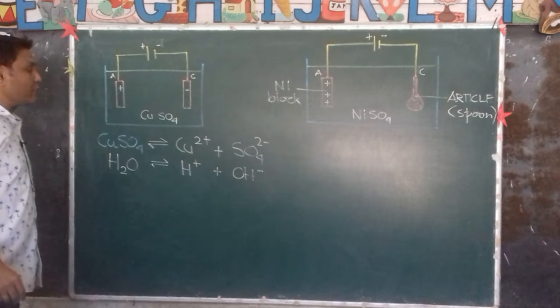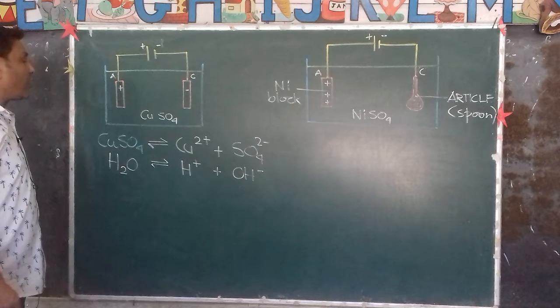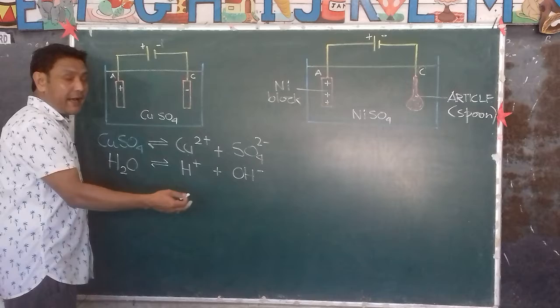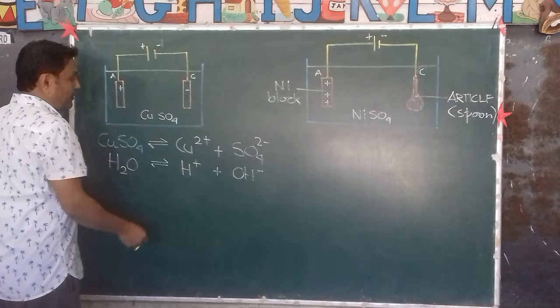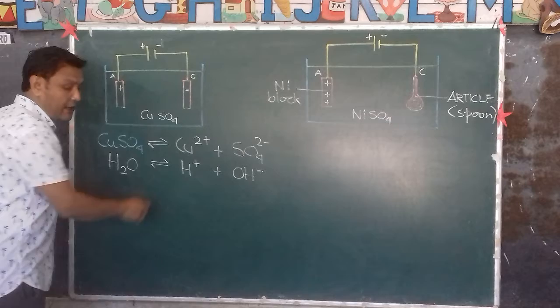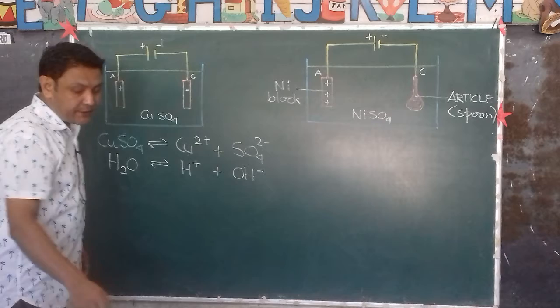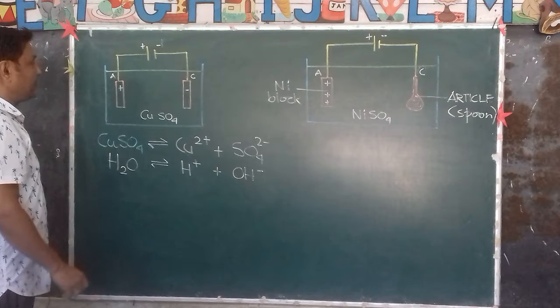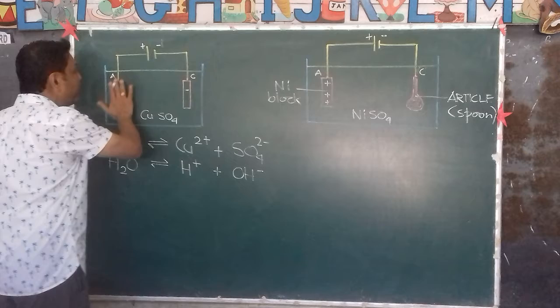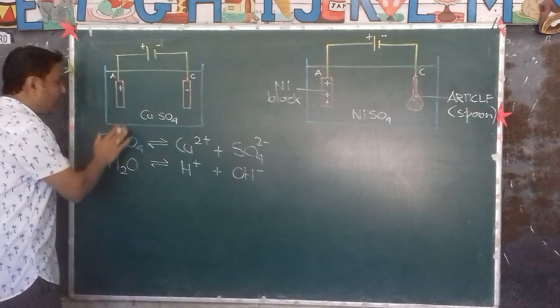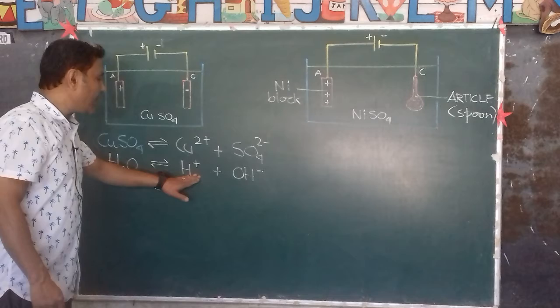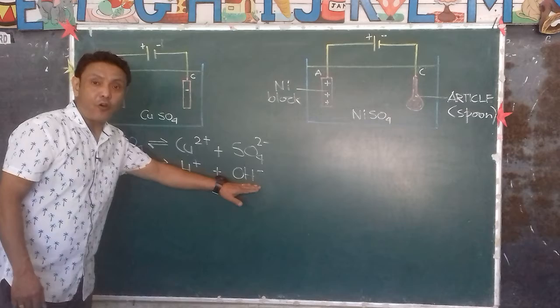A question might be: name the ions present in the electrolyte when using copper sulfate. The cations are copper ions Cu²⁺ and hydrogen ions H⁺. The anions are sulfate ions SO₄²⁻ and hydroxyl ions OH⁻. These four ions are present in their millions in the electrolyte.